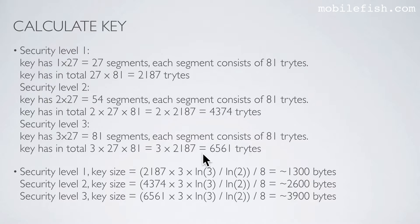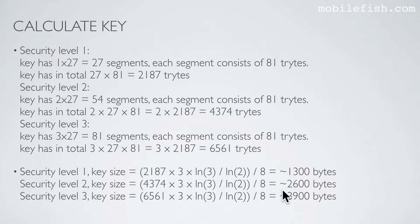If you convert these trit values into bytes, you get the following. Security level 1 gives a key size of approximately 1,300 bytes. Security level 2 gives approximately 2,600 bytes. And security level 3 gives approximately 3,900 bytes.